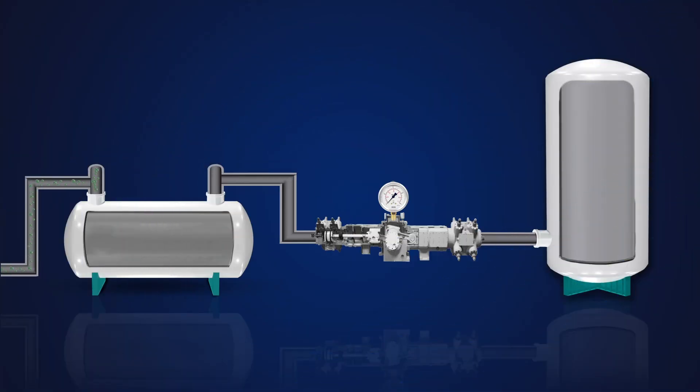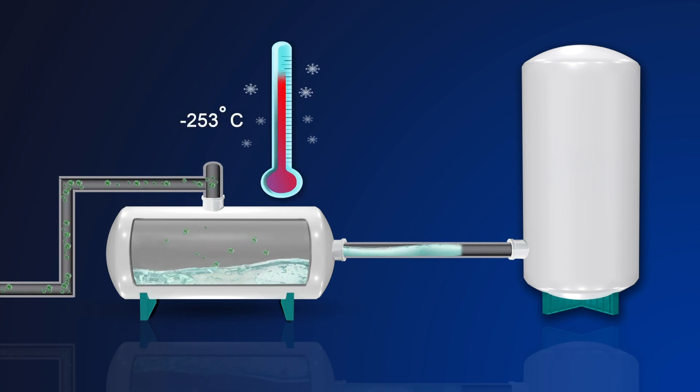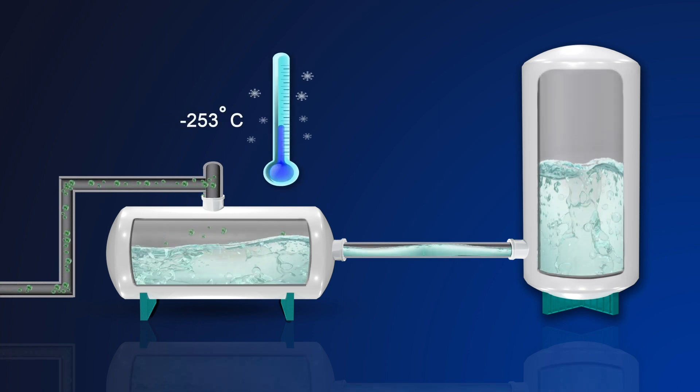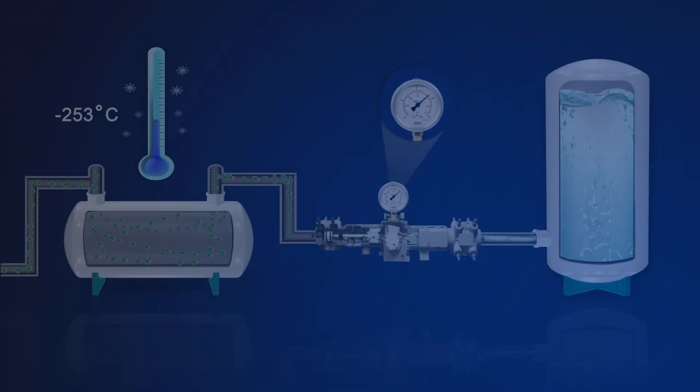In physical storage, you have compressed hydrogen where hydrogen is stored in pressurized tanks, or liquid hydrogen where the hydrogen gas is cooled to negative 253 degrees Celsius to form liquid hydrogen that can then be stored. You can also combine the two.